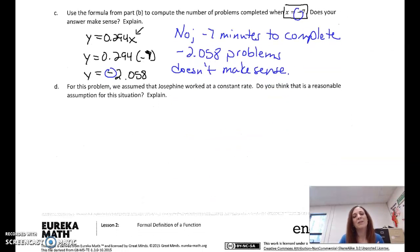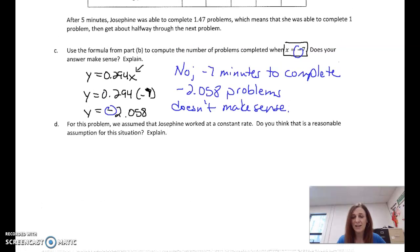For this problem, we assume that Josephine worked at a constant rate. So I want you to think of when you do your homework, whether in my class, somebody else's class, doesn't matter. Do you think it's a reasonable assumption that we work at a constant rate? That you are constantly, and when we say rate, we're doing numbers or problems per minute. So if we have a constant rate, we have the same number of problems per minute.